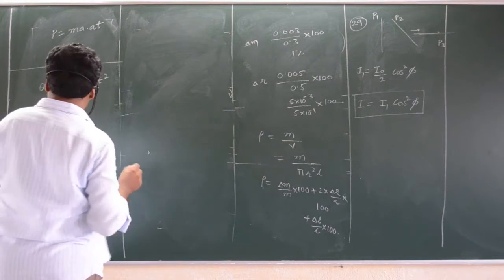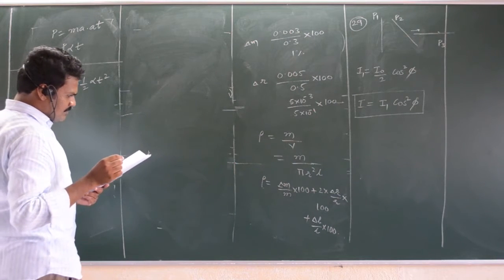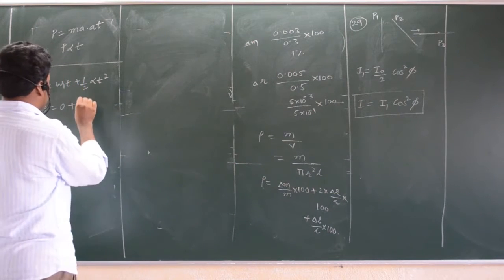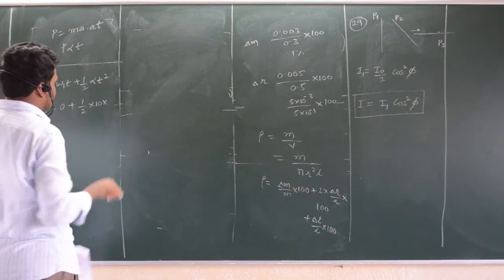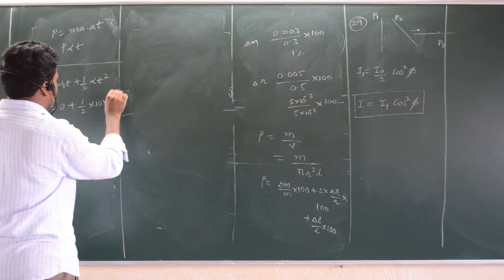So, time is given 5 seconds. Theta is equal to 0 plus, angular velocity is 10 radians, half into 10, into time is 5 seconds, 5 square. This is the answer.